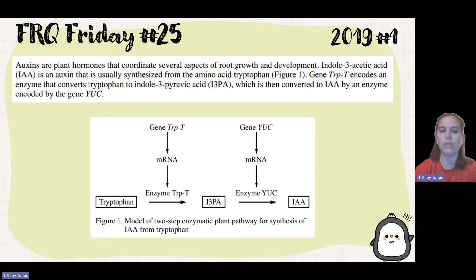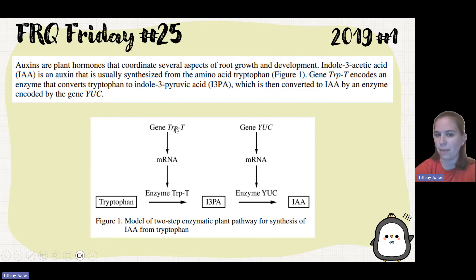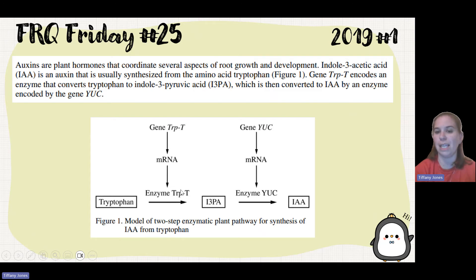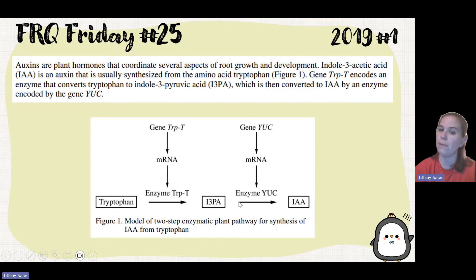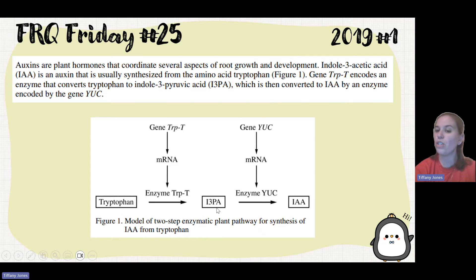Gene trypte encodes an enzyme that converts tryptophan to indole-3-pyruvic acid, I3PA, which is then converted to IAA by the enzyme encoded by the gene yuck. The figure shows everything. Here I have gene trypte — we go through transcription, make the mRNA, then translation to make the enzyme trypte. Gene yuck similarly goes through transcription, makes mRNA, then translation to make the enzyme yuck. Tryptophan uses enzyme trypte to make I3PA, which then uses enzyme yuck to make IAA.